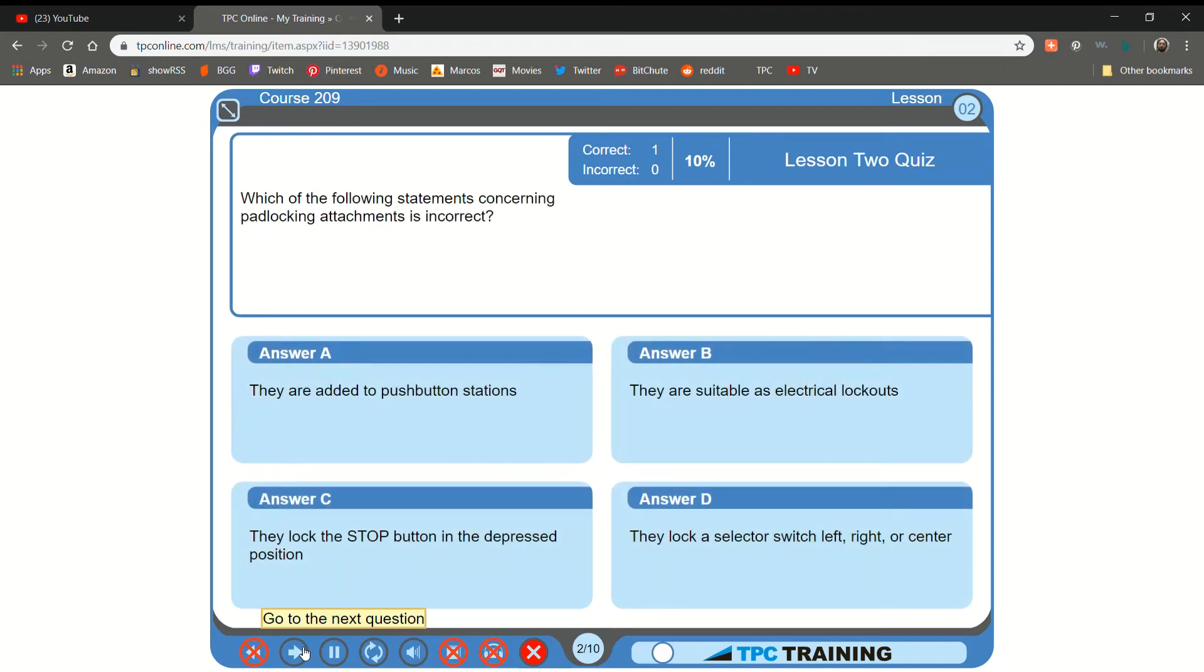Which of the following statements concerning padlocking attachments is incorrect? A. They are added to push-button stations... B. They are suitable as electrical lockouts... C. They lock the stop... That is correct.